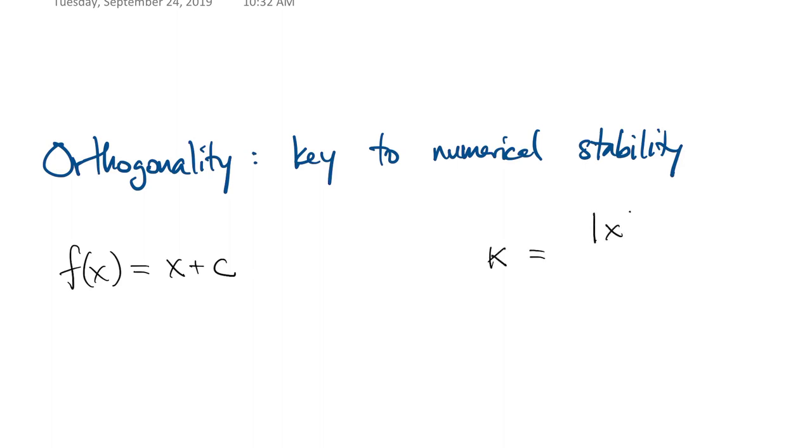One of the keys to numerical stability when working in higher dimensions is called orthogonality. So let's think back to the simple problem of scalar addition. We found that it had a condition number that could be large when the result is much smaller than the original.